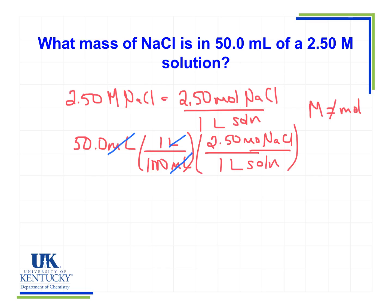Now my liters cancel, and I'm left with moles of NaCl. So now I've got to get to grams, and I need to go back to what I know about sodium chloride. I can do the calculation based on the masses in the periodic table. The molar mass of sodium chloride is 58.5 grams per mole — that's the mass of sodium plus the mass of chlorine.